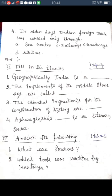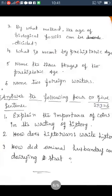Short answer questions: What are sources? Sources are the important objects or materials that help us to study history. The things used by human beings in the past that have remained are called sources. Which book was written by Kautilya? Arthashastra. By what method can the age of biological fossils be decided? By the Carbon-14 method.